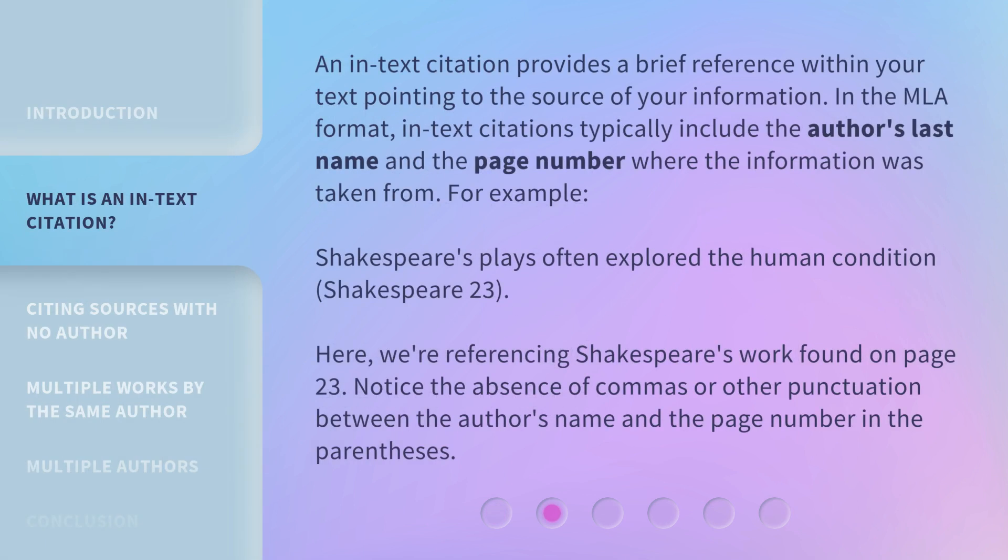An in-text citation provides a brief reference within your text pointing to the source of your information. In the MLA format, in-text citations typically include the author's last name and the page number where the information was taken from. For example: Shakespeare's plays often explored the human condition (Shakespeare 23).